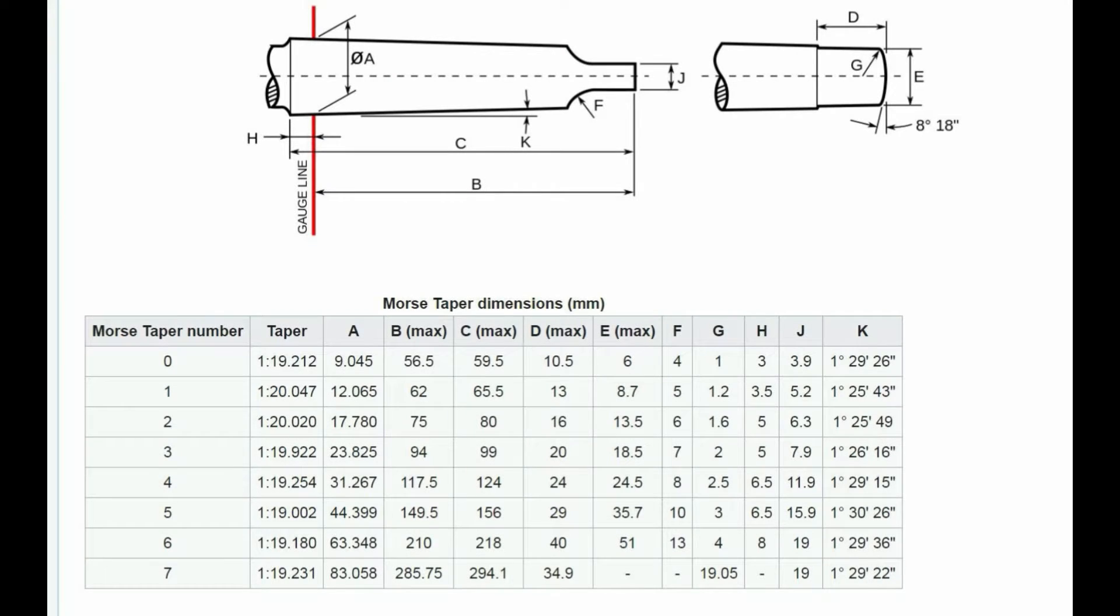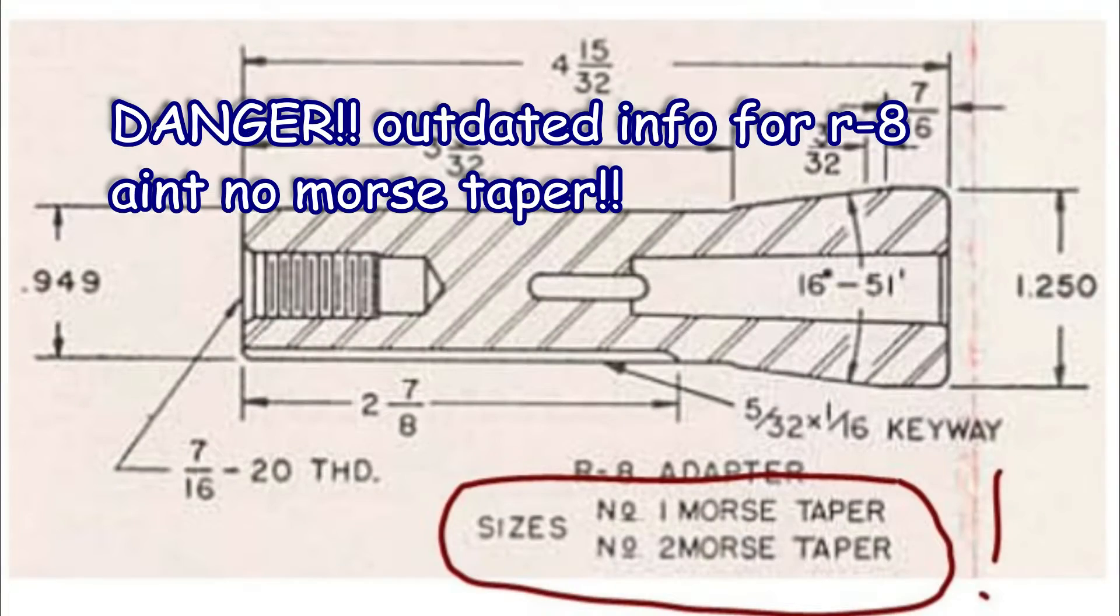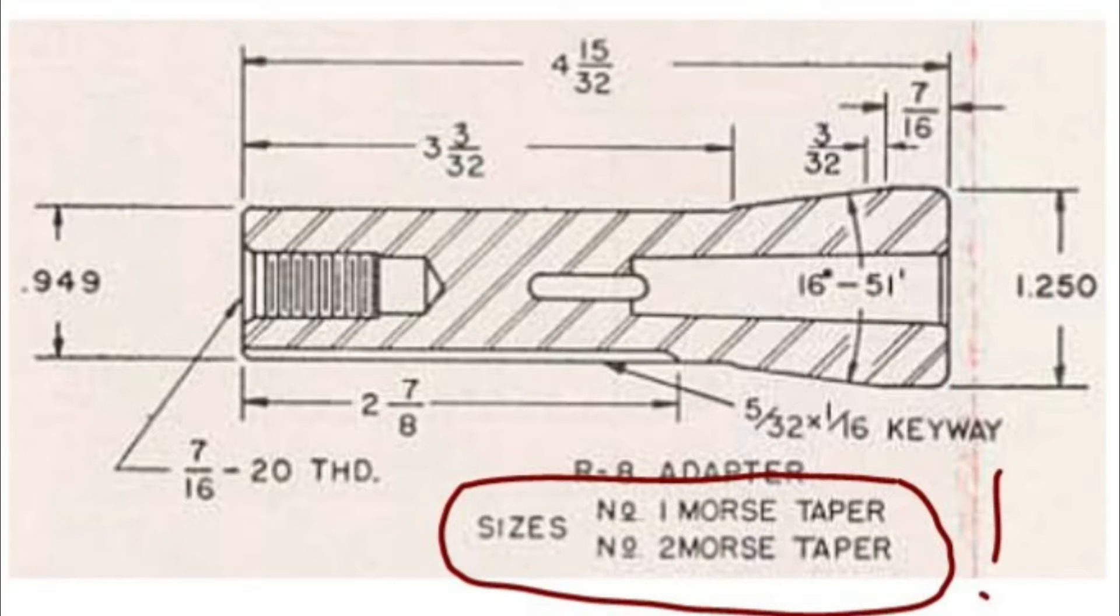Just Morse taper there just for general information to place into the video so that it's a package of information. Morse taper. Notice they're all different. Old information. See the Morse taper down there? That's not there. Now maybe that applied to part of the sketch below that got chopped off. I don't know.